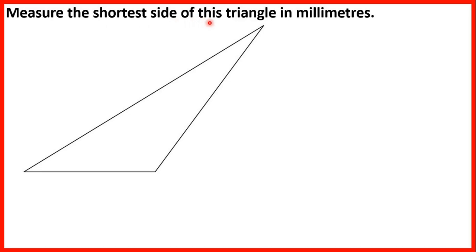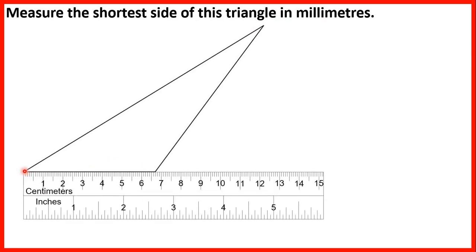Measure the shortest side of this triangle in millimetres. The shortest side will be the one at the bottom. We line up the ruler so that 0 is at one end of the line, and at the other end we can see it's past 6 and then 7 of the little lines, so that's 6.7 centimetres. But we need to give our answer in millimetres, so we multiply by 10, giving us 67 millimetres. You also get the mark for 66 or 68 millimetres.